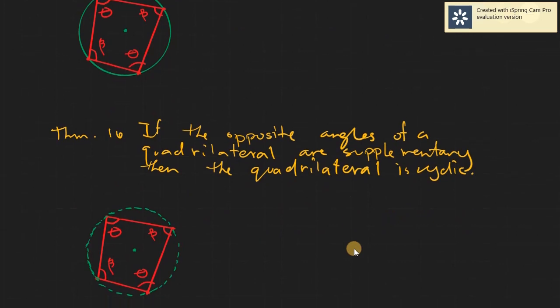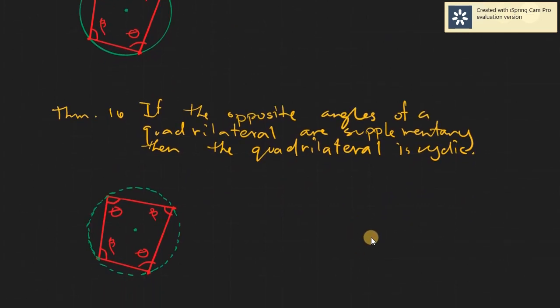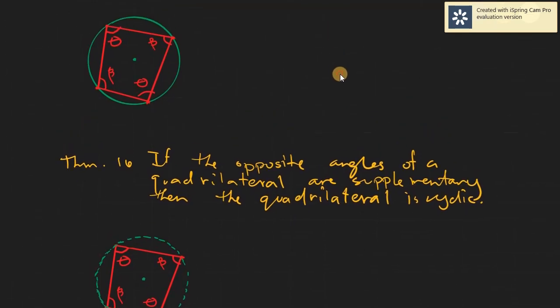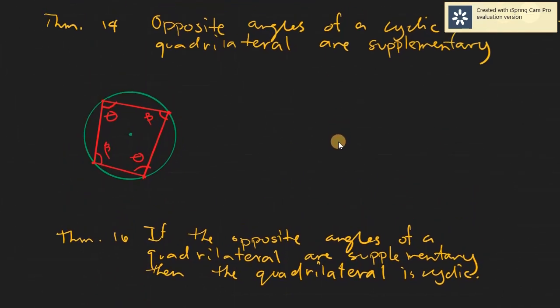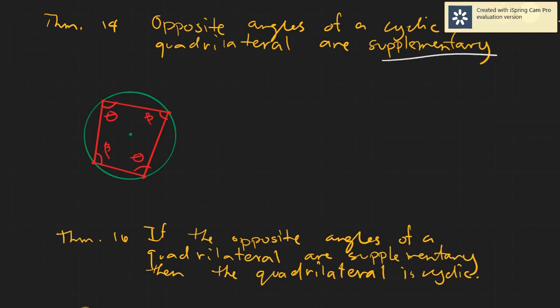The converse would be: if the opposite angles of a quadrilateral are supplementary, then the quadrilateral is cyclic — meaning you can create a circle using the vertices of the quadrilateral. So first, let's define Theorem 14. When we talk about supplementary, it simply means that the angles have a sum of 180 degrees.